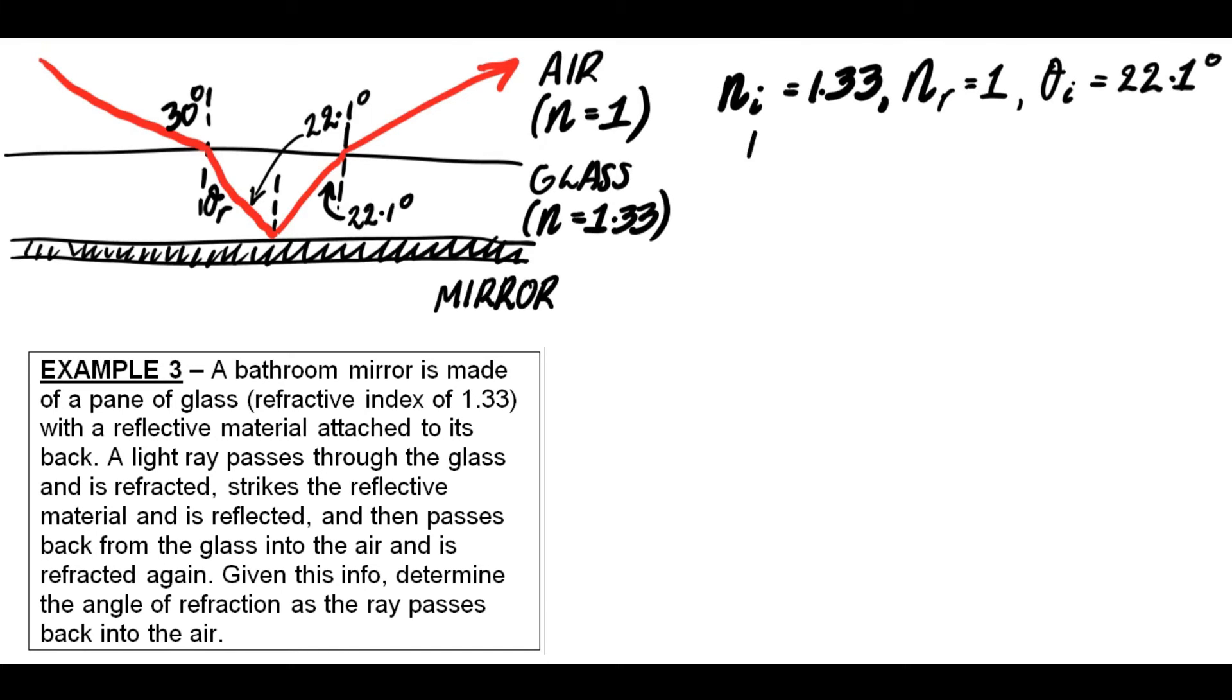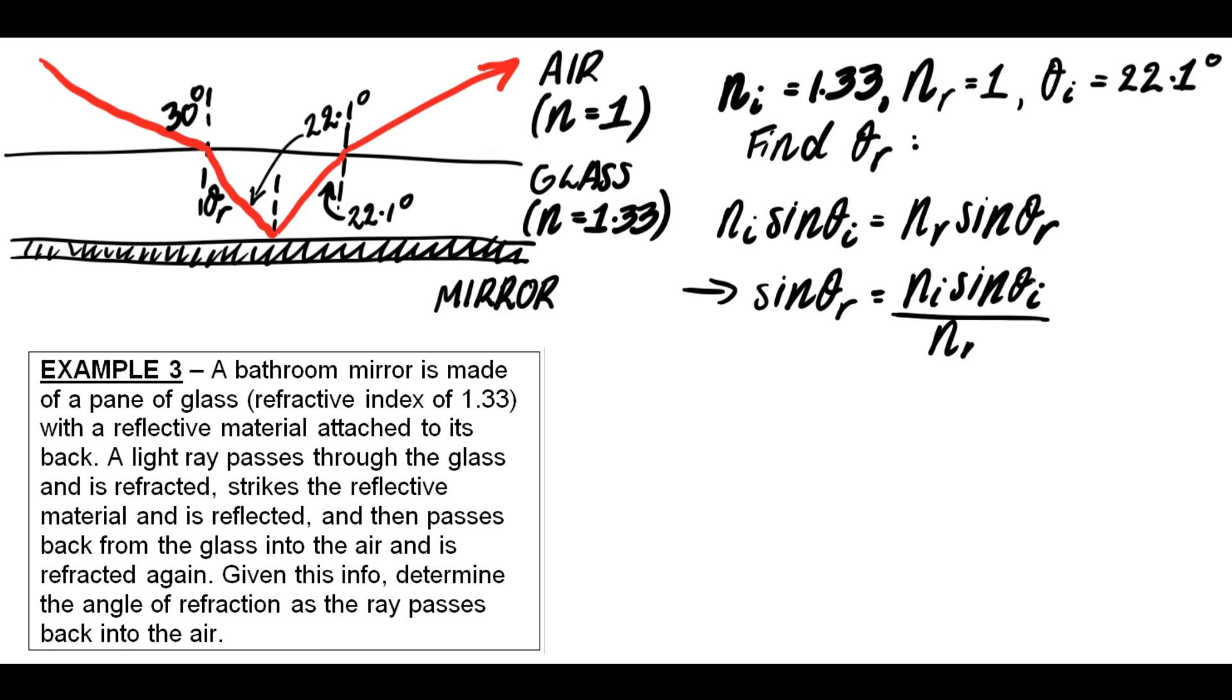So now I need to take Snell's law again, and this time I'm going to solve for the sin of θr, but this sin of θr will be the angle of refraction as the ray goes back into the air. So like before, start off with Snell's law, rearrange Snell's law to make sin of θr the subject, insert the numbers that you know, and then solve for sin of θr. Then once I've done that, I'll be able to then take that and do an inverse sine operation on that, and that will give me my angle of refraction, which is my final answer.